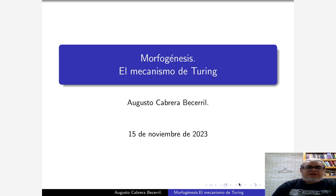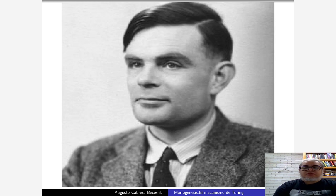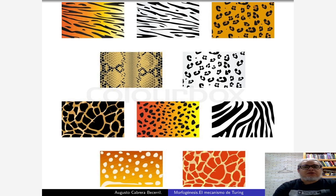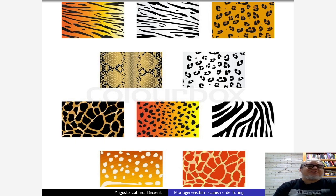Quiero hablar sobre el trabajo de Turing y qué tiene que ver con los modelos de morfogénesis. Este es Alan Turing, uno de los matemáticos más importantes por sus aportaciones en al menos tres campos. Uno de ellos es la morfogénesis, es decir, explicar de dónde surgen algunos de los patrones que tienen en las pieles los seres vivos, como las rayas de los tigres, las motas de los leopardos, o las rayas de los peces payasos o de las cebras.